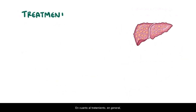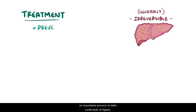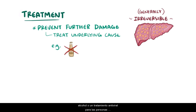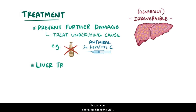As to treatment, generally the scarring in cirrhosis is irreversible, so it's important to prevent continued liver damage by identifying the underlying cause and treating that — for example, stopping alcohol consumption or antiviral treatment for those with hepatitis C. With advanced cirrhosis where the liver stops functioning, a liver transplant might be needed.